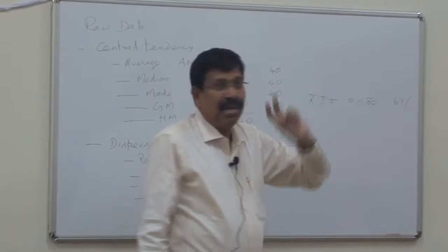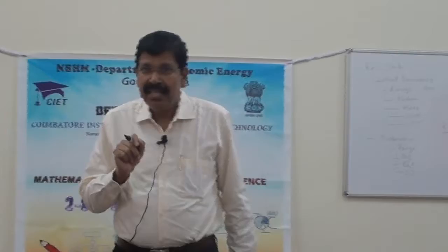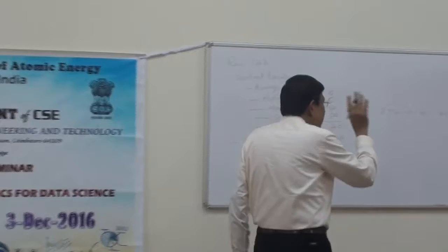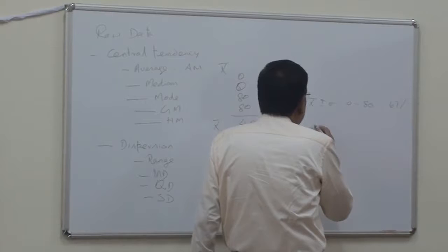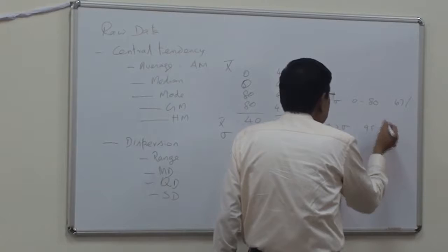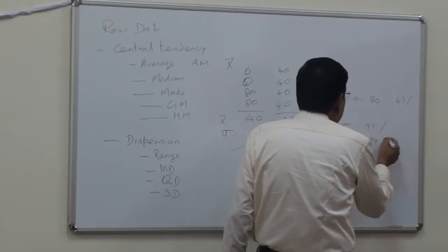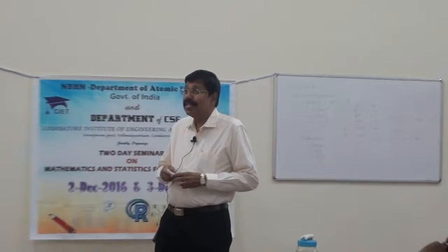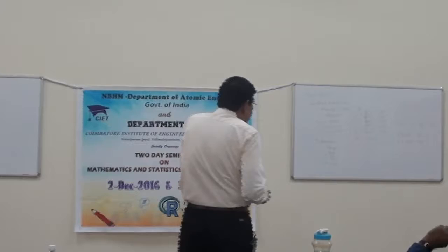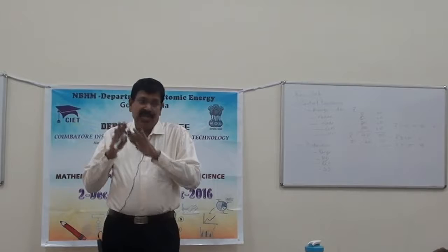Mean plus 1 sigma gives the range 0 to 80, and only 67% of the values are expected to lie there. If we widen this width to 2 sigma, 95% of the values are expected to lie within it. At 3 sigma, 99% of the values are expected to lie. How these values of 99%, 95% arise you will see after studying probability. So x-bar ± sigma is the range or width within which the individual observations are expected to fall.